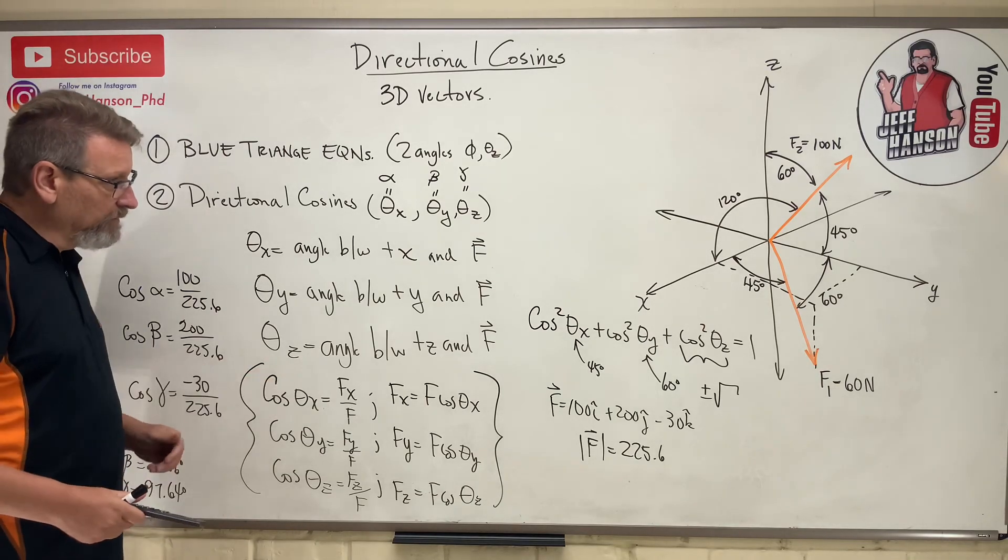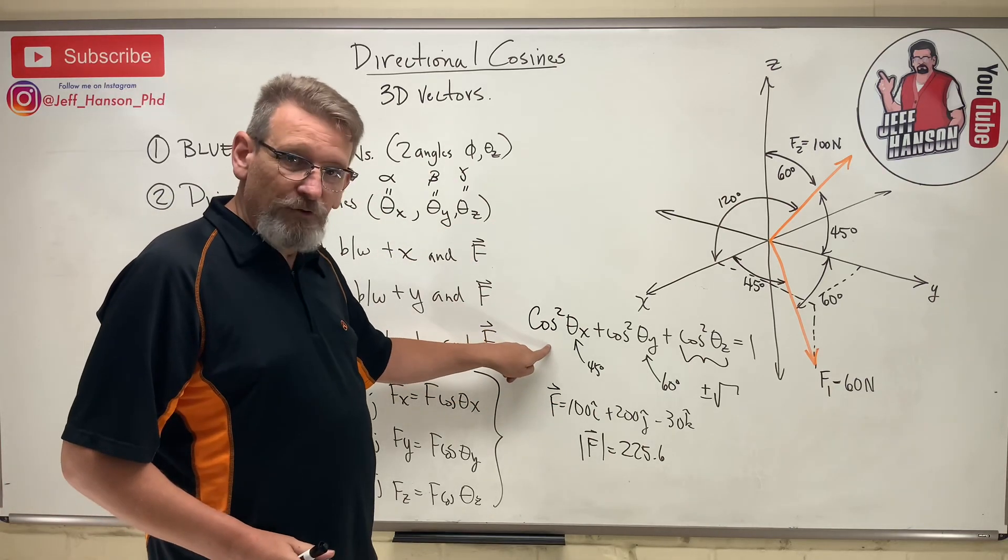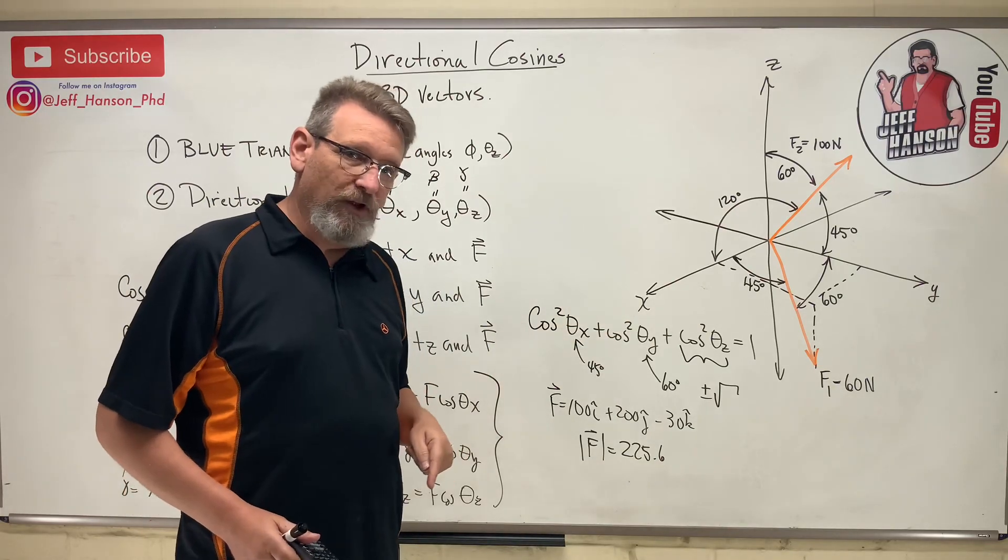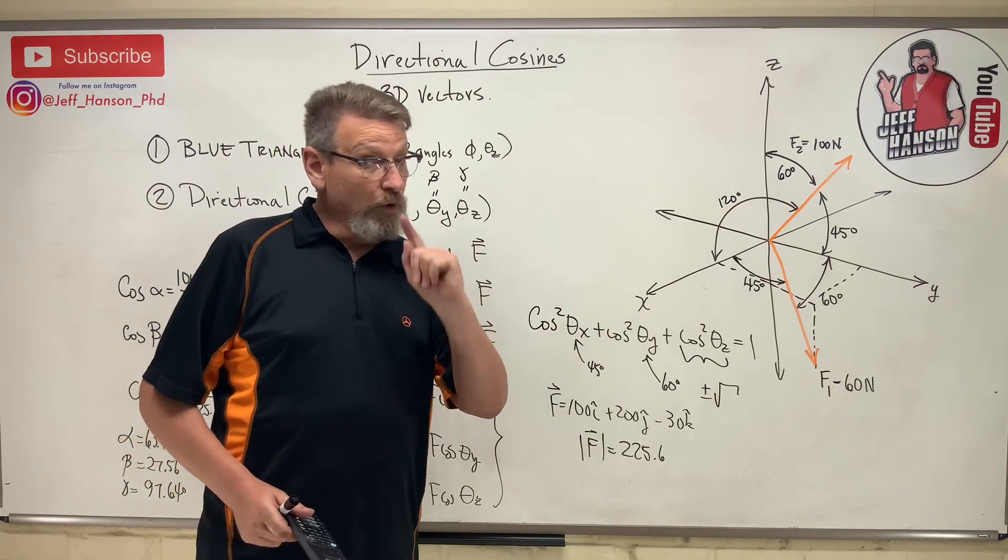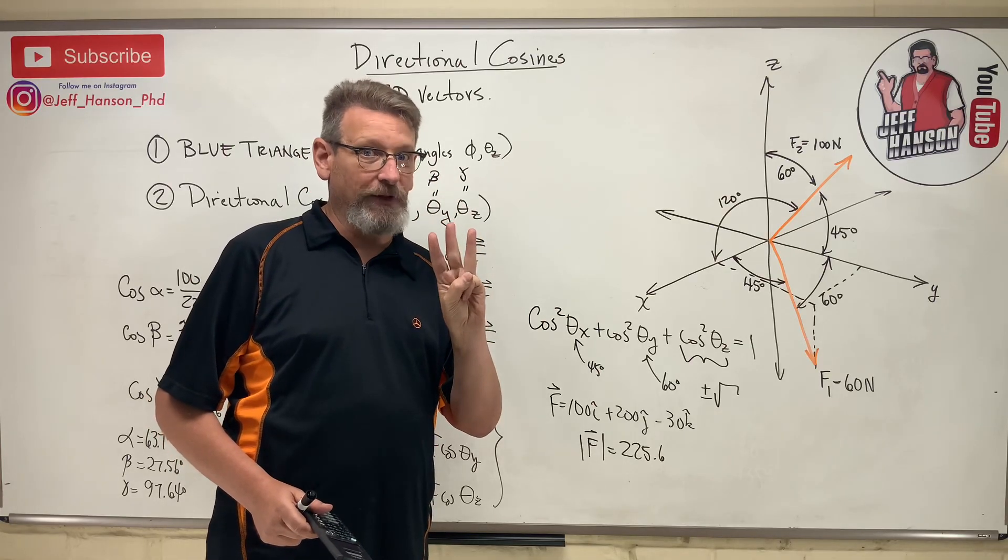So that's all there is to directional cosines. They're easy to remember, easy to identify. The only trick is that little trick-a-roo right there. You've got to remember that equation to be able to solve these. I hope that helps. We're on to the next video, which is way number three to do 3D vectors, and it's the last one.